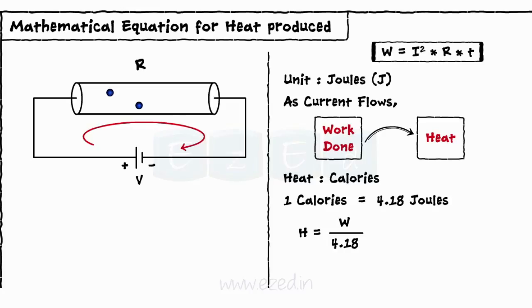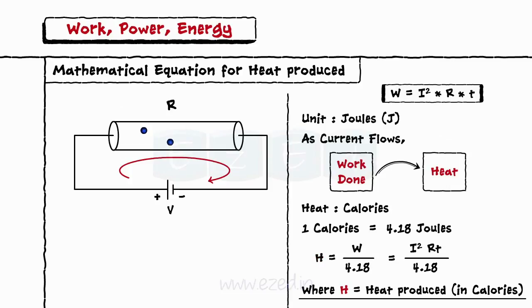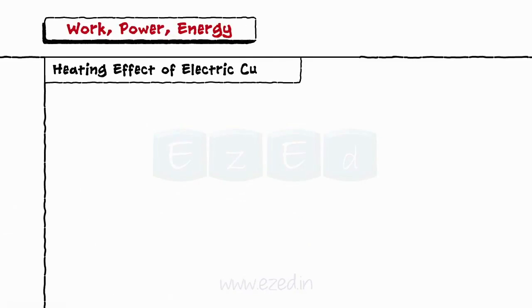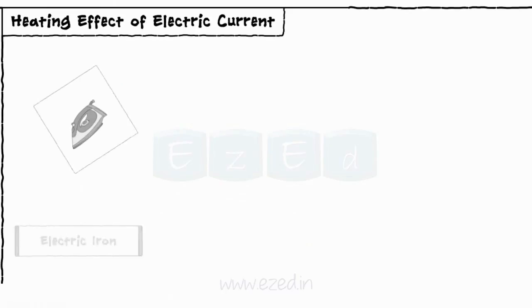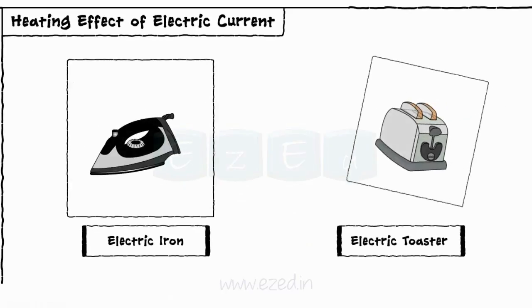The examples of heating effect of electric current are electric iron, electric toaster, etc.